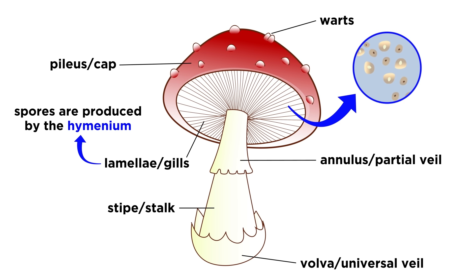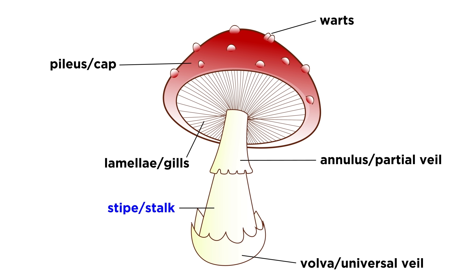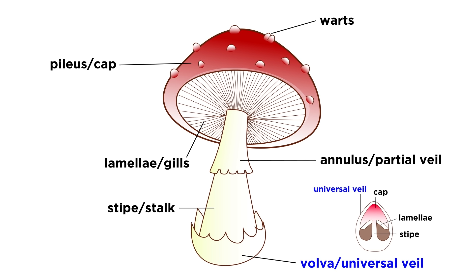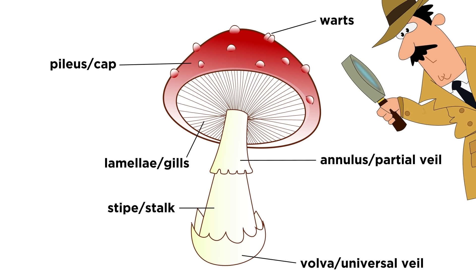The spores in a fruiting body allow for sexual reproduction of the fungus. The part holding the pileus, or cap, is called the stipe, or the stalk. At the base of the mushroom, there is a white cup encasing the stipe. This is called the volva, or universal veil. The universal veil houses the immature fruiting bodies of mushrooms. As you can see here, the maturing mushroom sprouts from the universal veil. The ring of tissue below the cap and gills is called the annulus, or partial veil. It covers the hymenium throughout development and then detaches from the hymenium once the fruiting body matures.